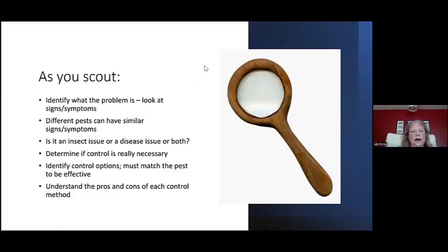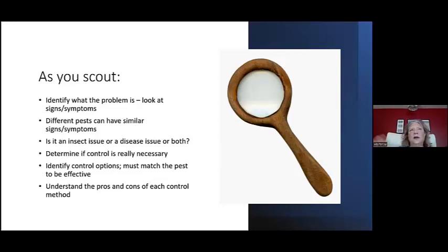Different pests can have different signs and symptoms, and there might be a combination of insect and disease problems. Determine if a control is really necessary. You want to identify control options, but they must match the pest or disease to be effective. That's another reason why scouting, finding signs and symptoms, and sending pictures to us to help you decide what the threshold is — is this a cosmetic problem or something you need to jump on? Most of our recommendations from the Extension Horticulture Help Desk are cultural in nature, or sanitation. Very few end up being a chemical control, although that is appropriate in some situations.